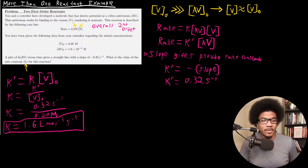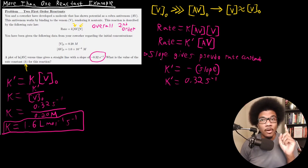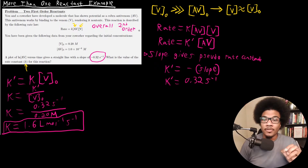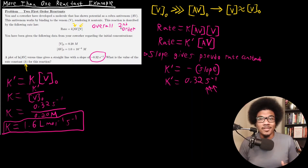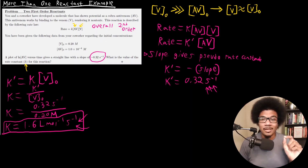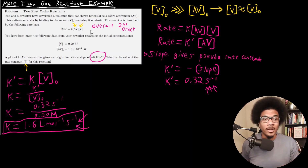That gives you your final rate constant. It might be tempting when you see the slope to think you already have the rate constant — but in a case with more than one reactant, they're giving you the slope that implies the pseudo rate constant, and from there you have to back out the real rate constant. Always think about the overall order of the reaction: the overall order here is second order, so you would not expect per-second units for the rate constant. Thinking about the overall order and spotting the discrepancy in units will help you recognize when to apply this approach.